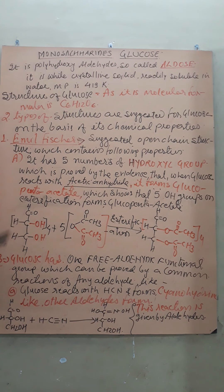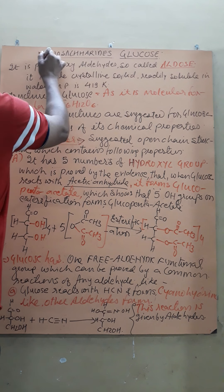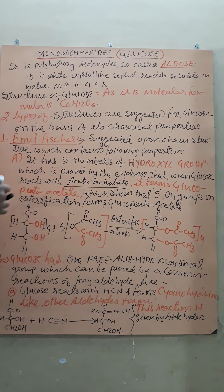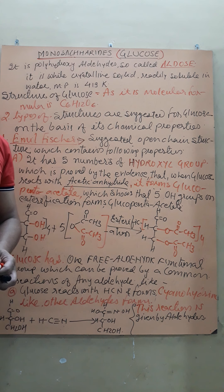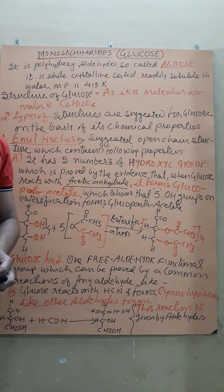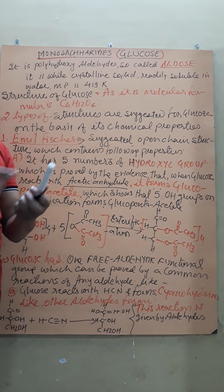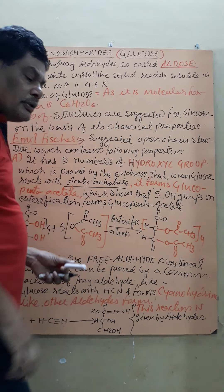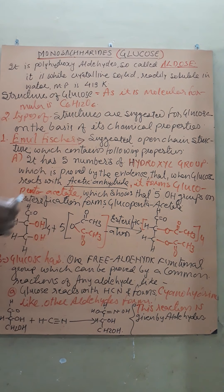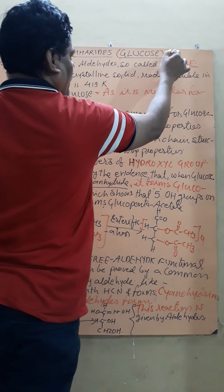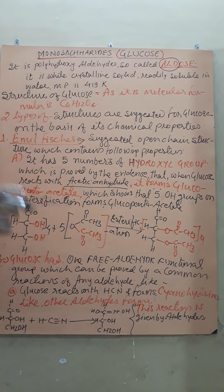We are starting with monosaccharide — glucose. Glucose is a polyhydroxy compound containing an aldehyde functional group. Therefore glucose is known as an aldose. The suffix OSE is used in nomenclature, and since the functional group is an aldehyde, it is called aldose sugar.